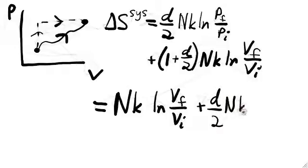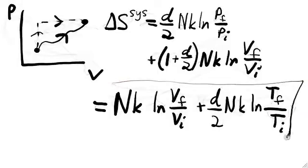This formula is even useful for irreversible processes which don't even have trajectories on the PV plane. For those processes, it's impossible to use the integral of dq over t to find the change in entropy because there's no path to integrate over. However, this formula will still work provided that you know the initial and final states.